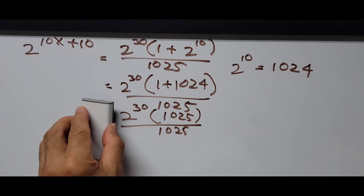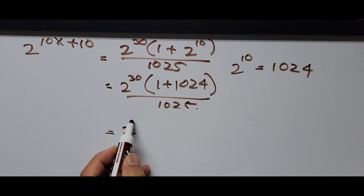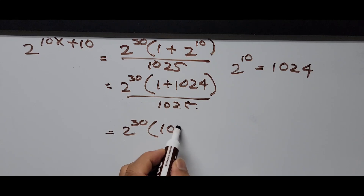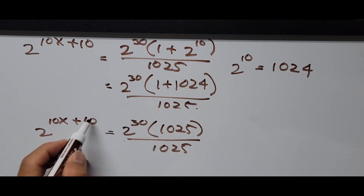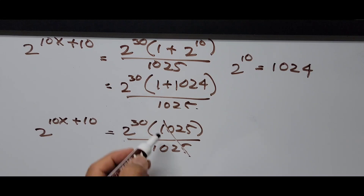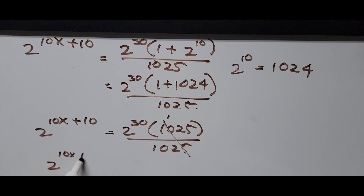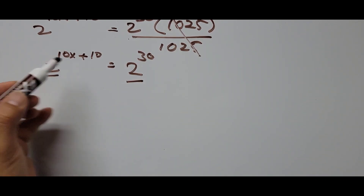So 1025 divided by 1025 cancels — that becomes 1. We end up with 2 raised to the 10x plus 10 equals 2 raised to the 30th power. And now if you notice, the bases are the same, which means the exponents will be the same.